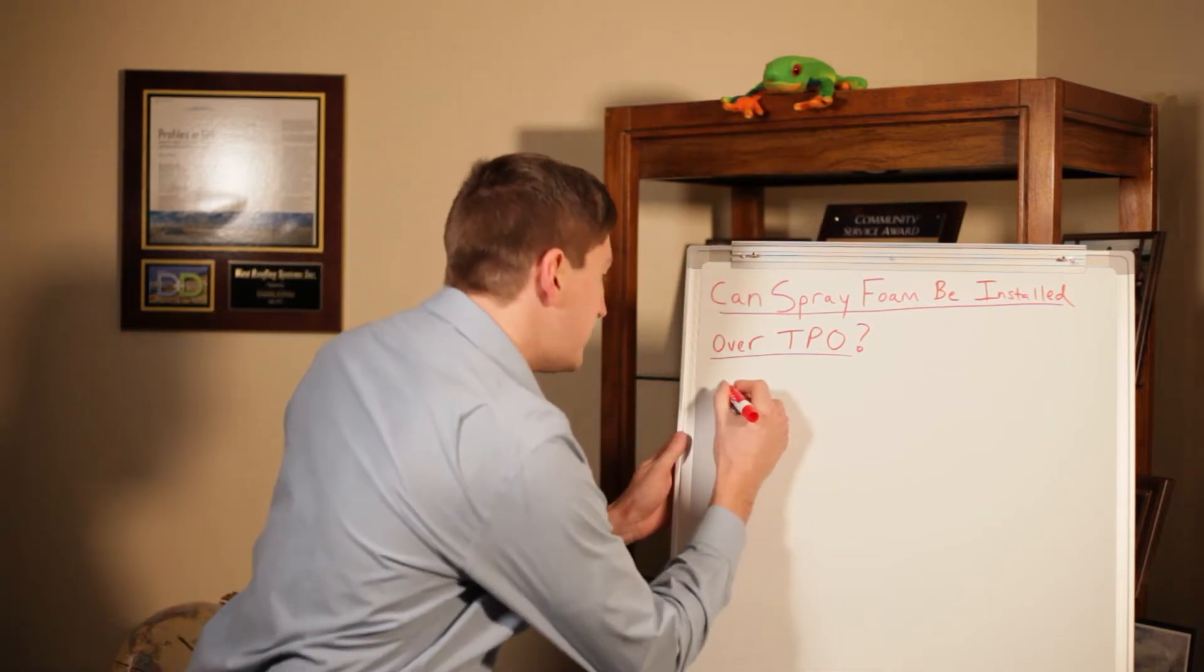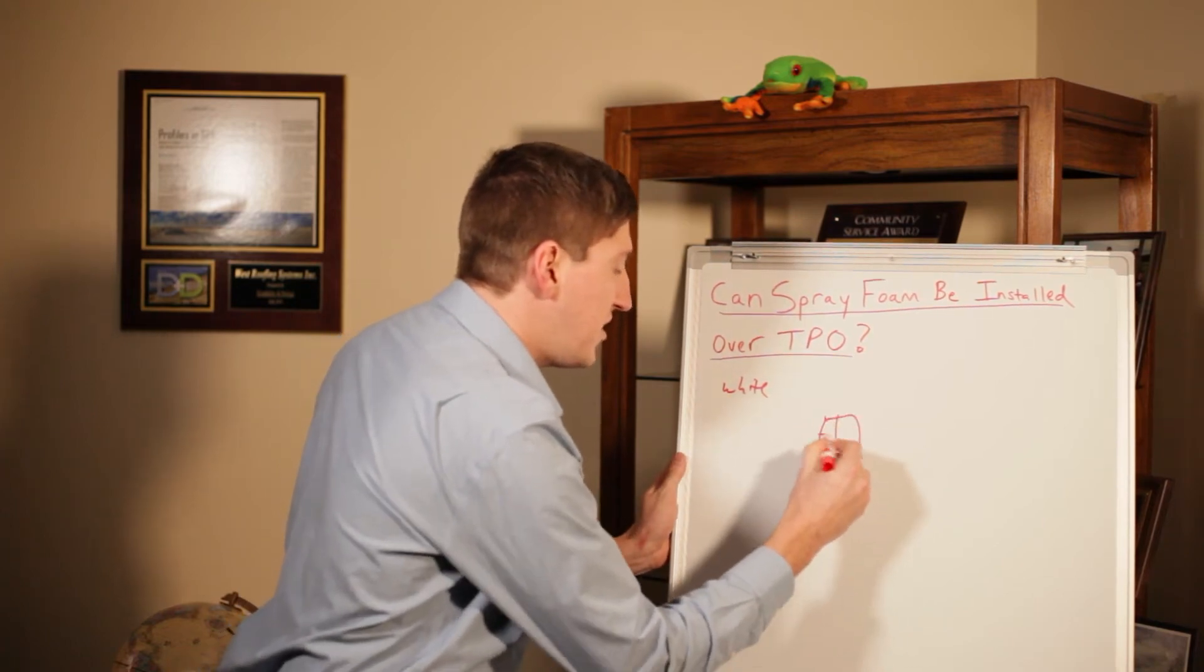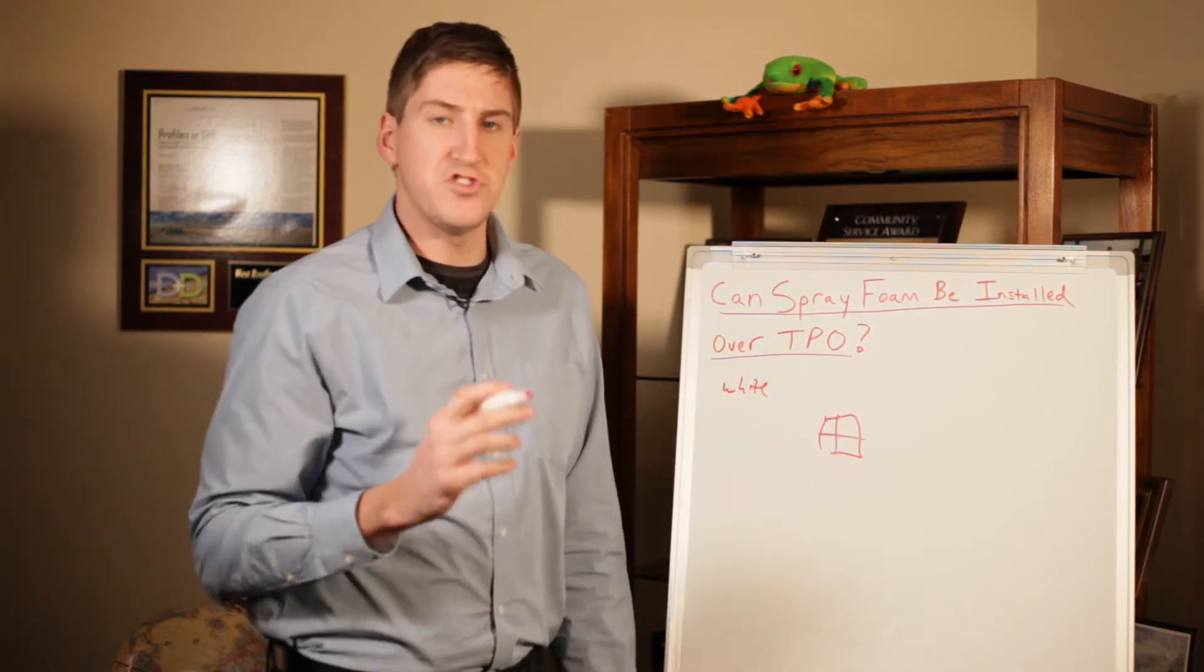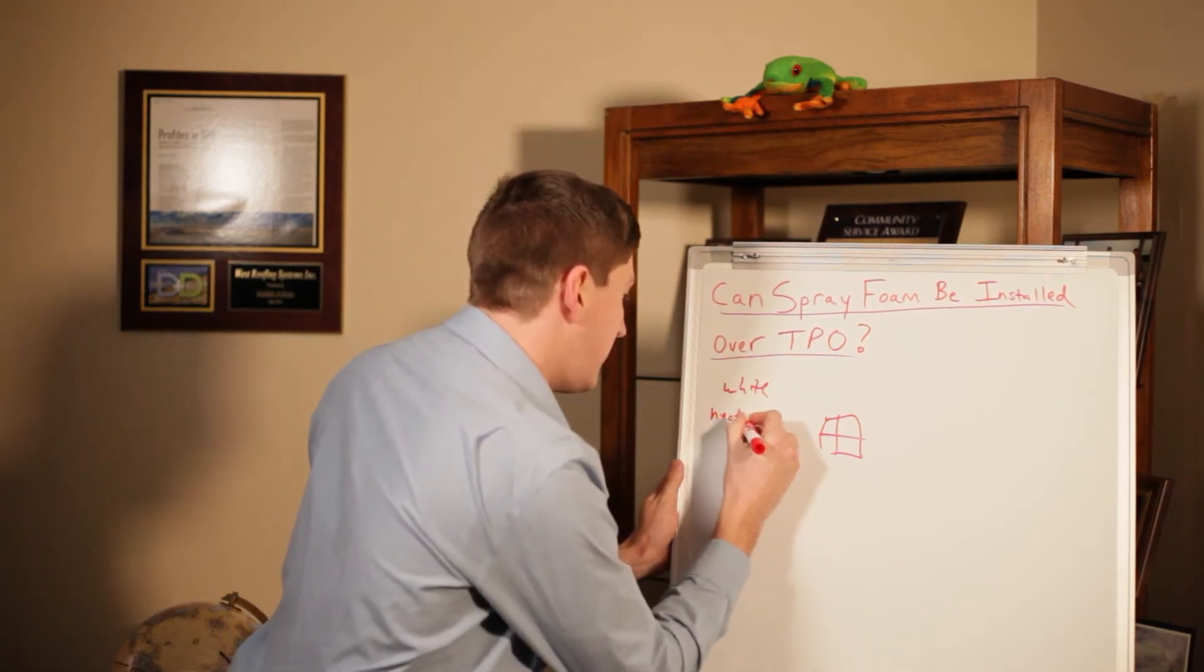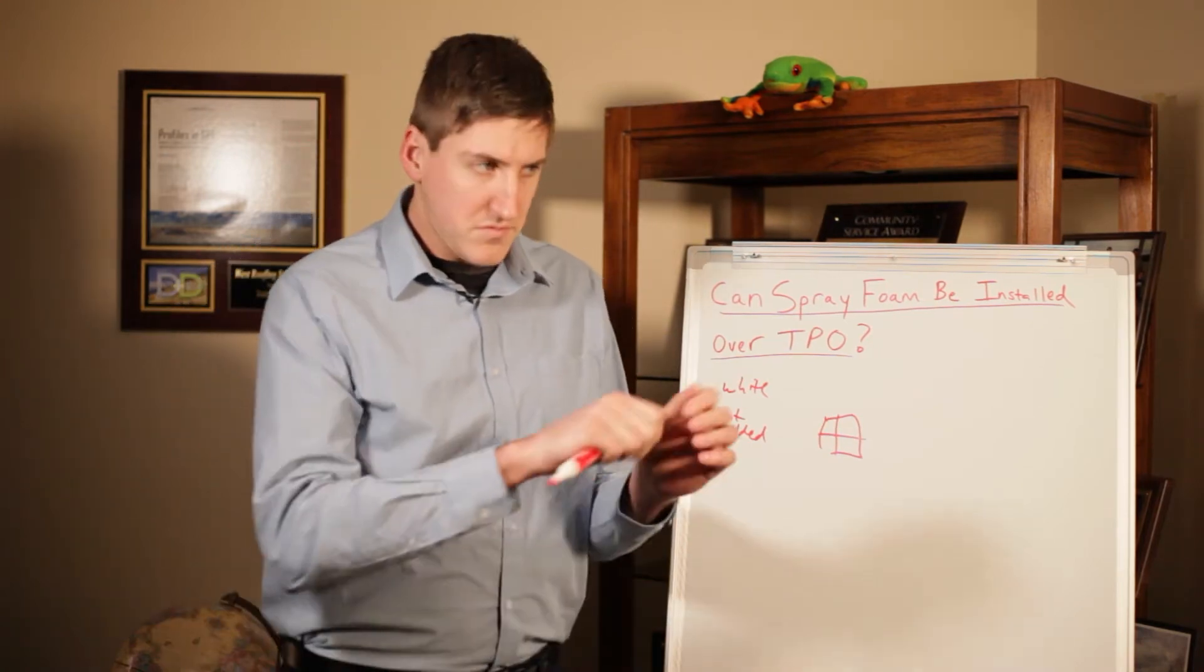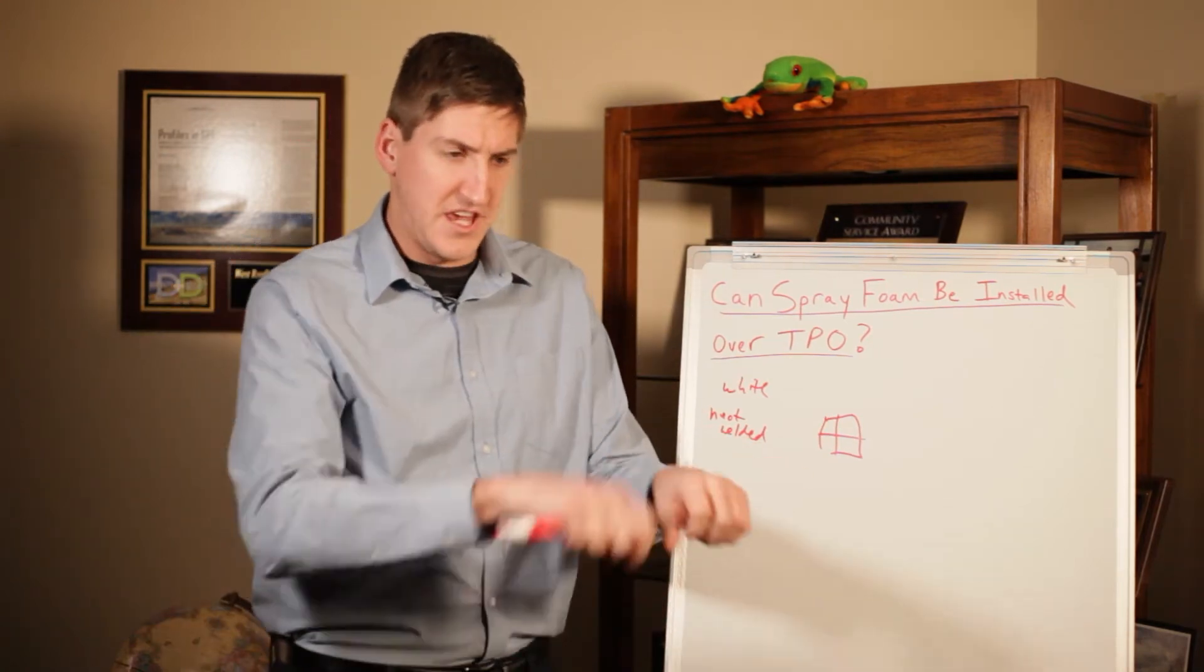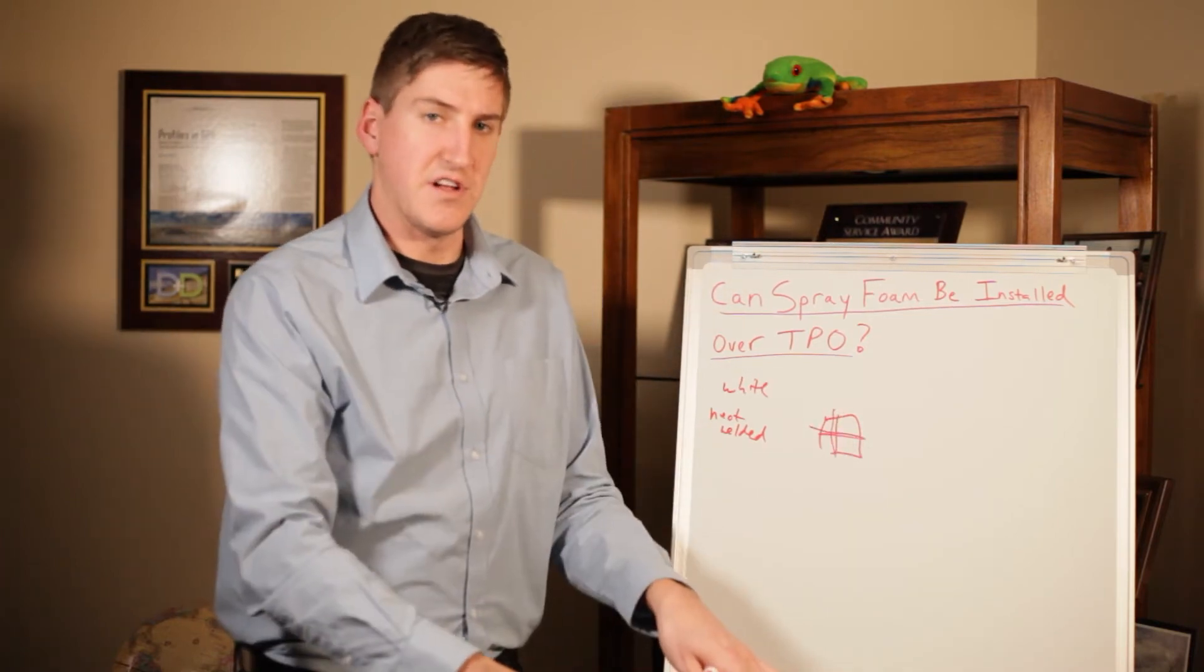TPO roof is white, it's laid out in sheets, usually 10, 12 and 20 foot sheets and the seams are heat welded together so there's no nail. You take like a hot gun and you go over the seams through this area and make sure it's secured to your roof there.